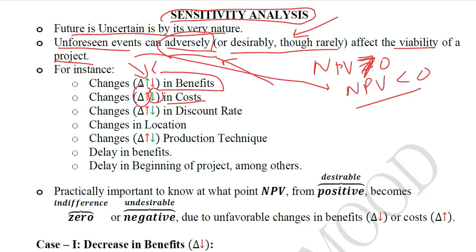Similarly, for the discount rate: if it increases unexpectedly, it is an undesirable change. And if it decreases, it is a desirable change. So the increase in the discount rate is undesirable, whereas a decrease is desirable.